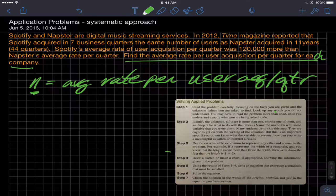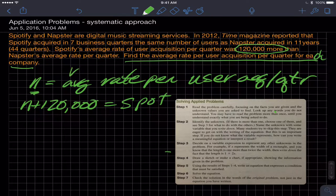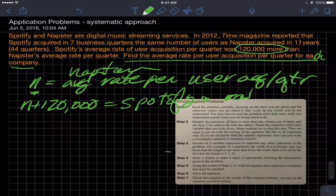If n is the rate at which Napster was acquiring users, and this says that Spotify's average rate was 120,000 more, wouldn't Spotify's be n plus 120,000? Which equals Spotify's rate per quarter, or users per quarter. This is Napster's and this is Spotify's rate per quarter.